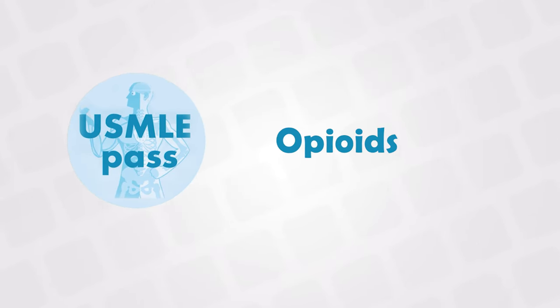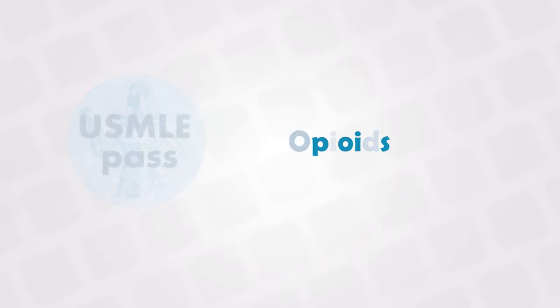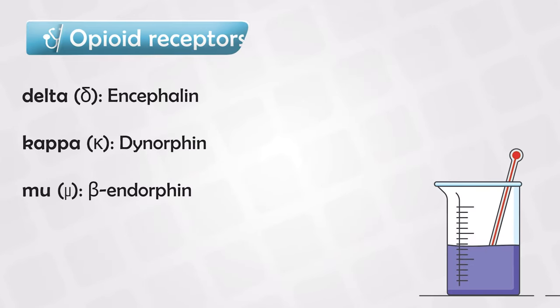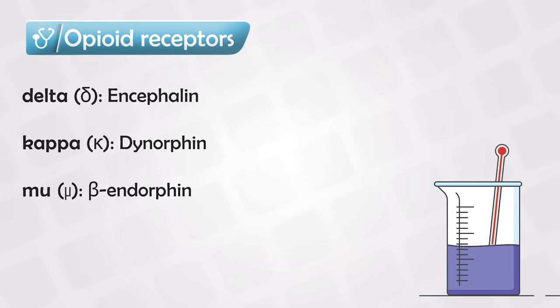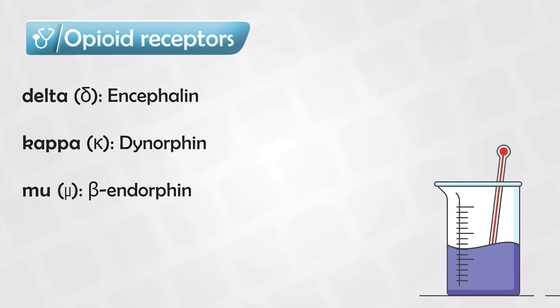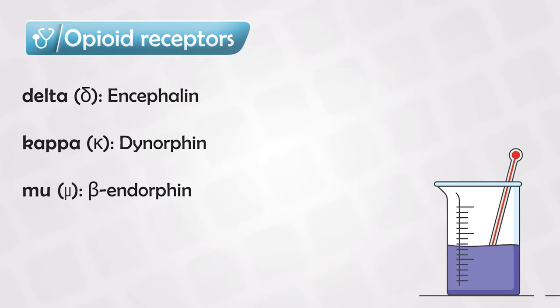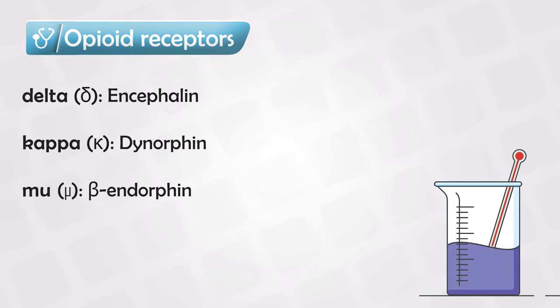Before we get into the opioid drugs, we need to learn the opioid receptors, and we have three of them: Delta, which is used by enkephalin; Kappa, which is used by dynorphin; and Mu, which is used by beta-endorphin.